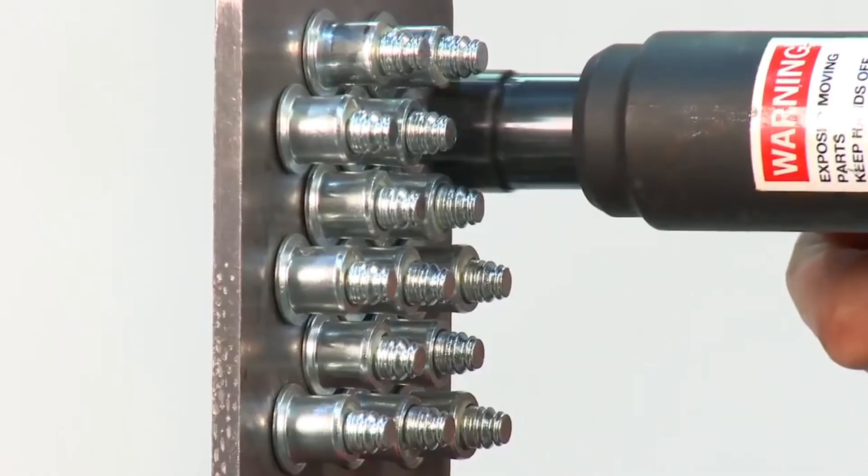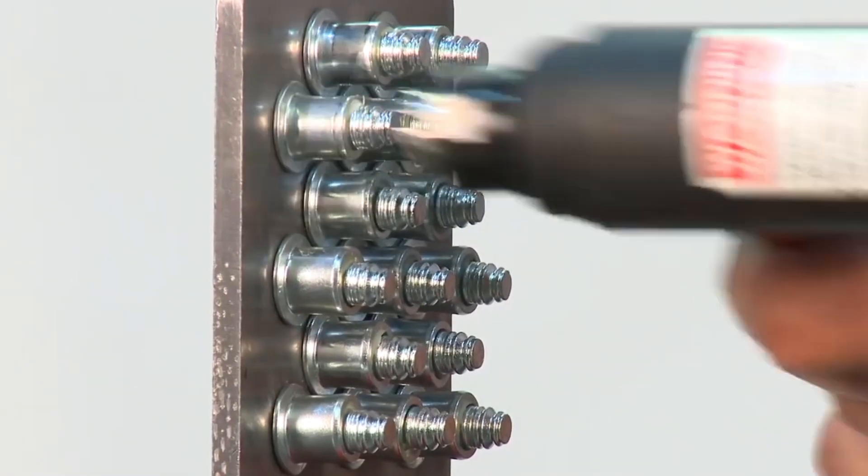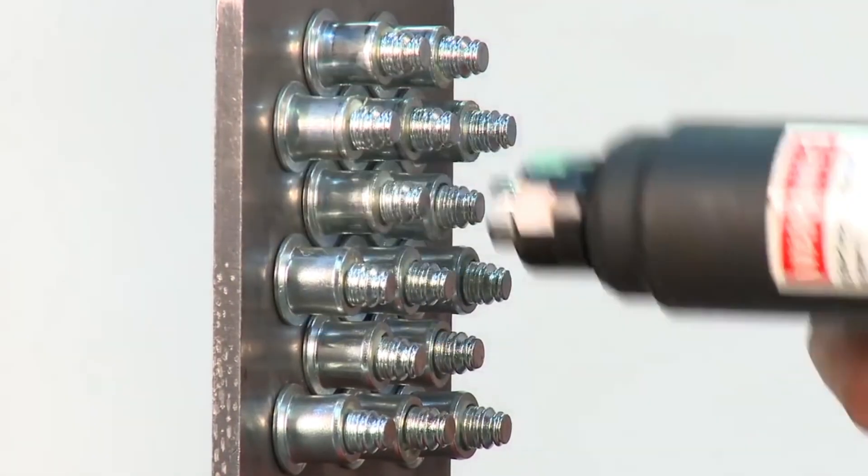When you design it for low swage, you make it so the installation tool runs at a lower pressure, or you can have lighter installation tools. The material on the bolt is the same as a regular bolt. The threads are different. They're lock threads. Those threads have a different function than the threads on a regular nut and bolt.